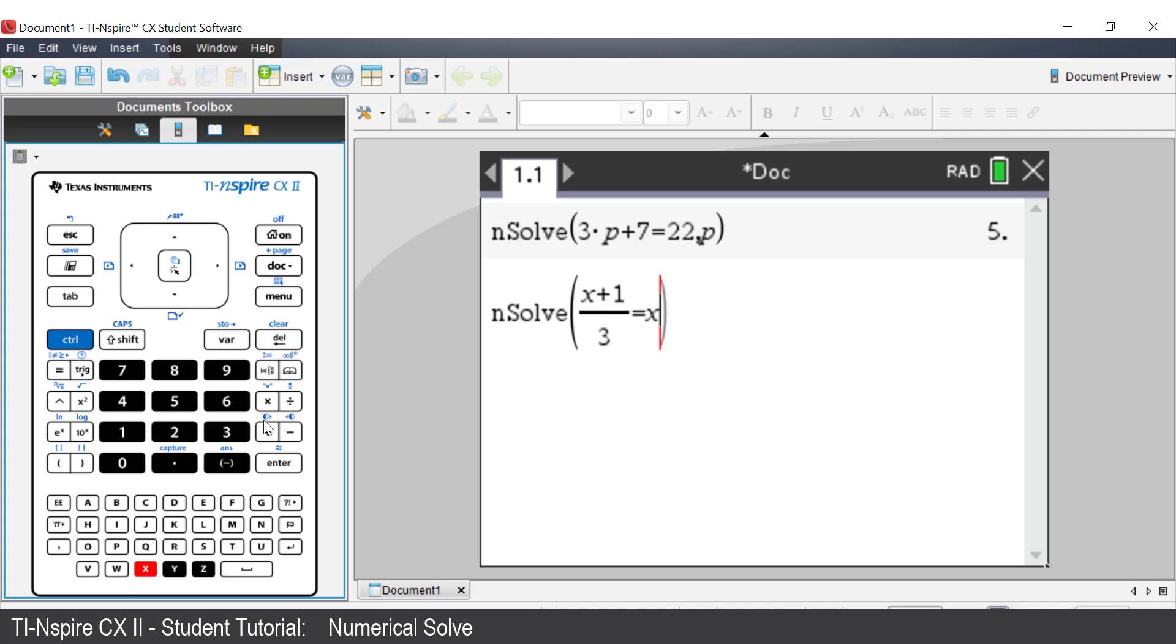As seen in the catalog, enter a comma, then x as we are solving for x. Press Enter. X is equal to negative 7.